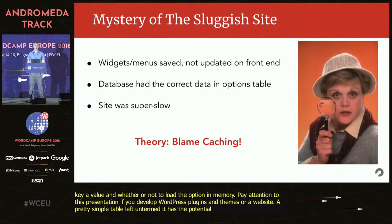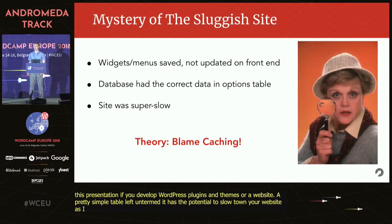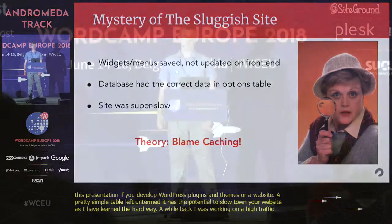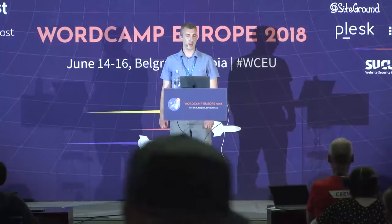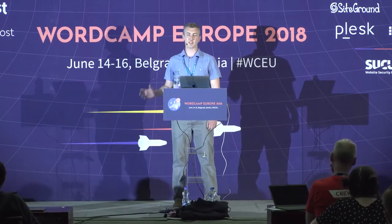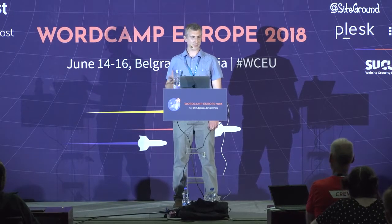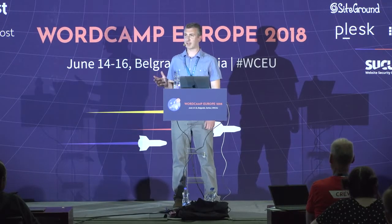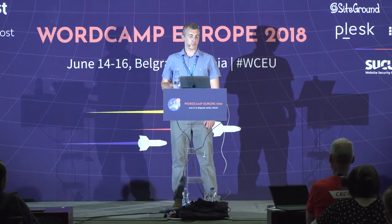A while back I was working on a high-traffic news website at 10Up, and we started getting complaints about slowness. There were some really mysterious things going on. The administrators were changing site settings and they weren't showing up on the front end. I went to the database and tried to figure out what was going on — it looked like things were saving correctly, but for some reason they weren't showing up.